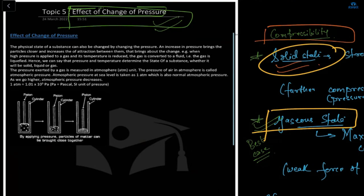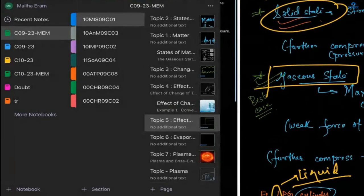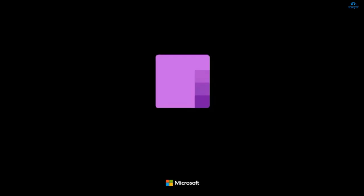Regarding the effect of change of pressure: gaseous states have a weak force of attraction and a lot of intermolecular space. When you compress a gas — applying pressure — the gas molecules come closer to each other, forming the liquid state. When you further apply pressure on the liquid, it converts into the solid state. For example, carbon dioxide gas under pressure becomes liquefied carbon dioxide, and under further pressure becomes solid carbon dioxide, also known as dry ice.